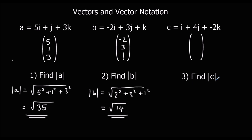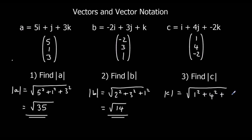And finally, c — it was 1, 4, minus 2. So the modulus of c is going to be the square root of 1 squared plus 4 squared plus 2 squared. 16 plus 4 plus 4 plus 1 is 21, so the modulus of c is root 21.